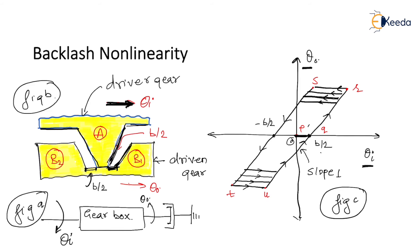After the contact is made, the driven gear rotates counter-clockwise through the same angle as the driver gear. The assumption here is that the gear ratio is unity. This motion after contact is shown in segment QR of figure C.